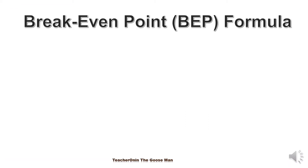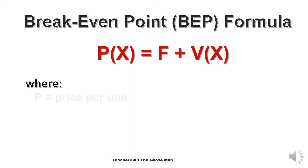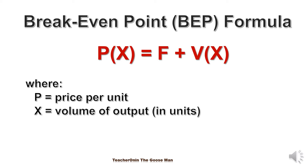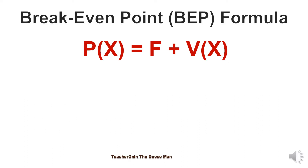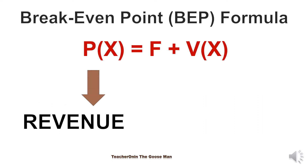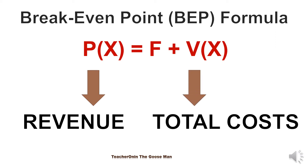So let's have the formula that we will use for the break-even point. Price per unit times the number of units is equal to fixed costs plus variable cost times the number of units. Take note that on the left-hand side is actually the revenue, and on the right-hand side is equal to the total cost. If the revenue is the same as the total cost, then we can say that we have the break-even.